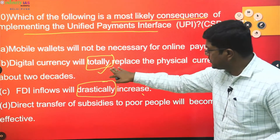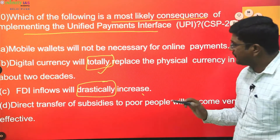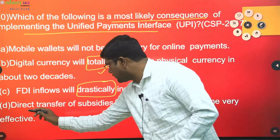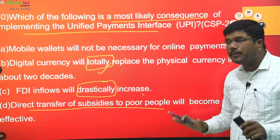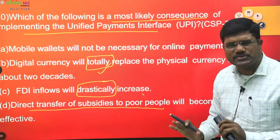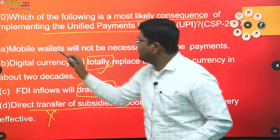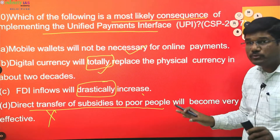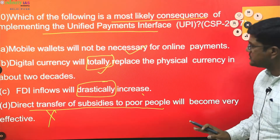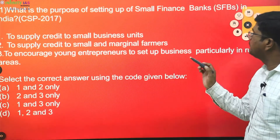There is no relation between FDI and UPI. Digital currency totally replacing physical currency — how is that possible, even in two decades? In a country like India, even after five decades we cannot say it will totally replace. Extreme words make statements B and C wrong. Option D — direct transfer of subsidies to poor people — do all poor people have UPI? Common sense says this may be wrong. Therefore, mobile wallets will not be necessary for online payment once UPI exists — answer is option A.